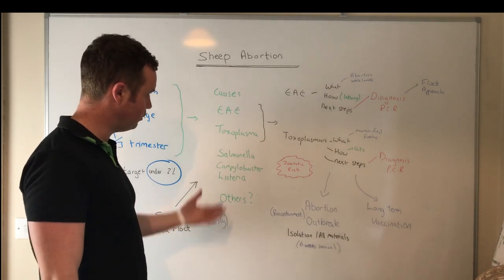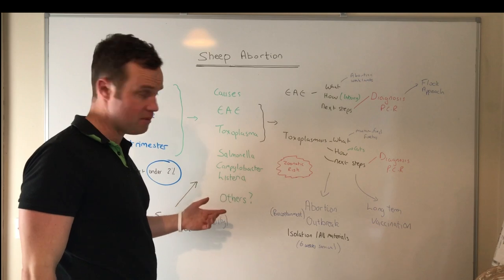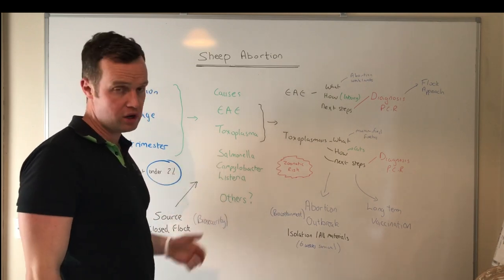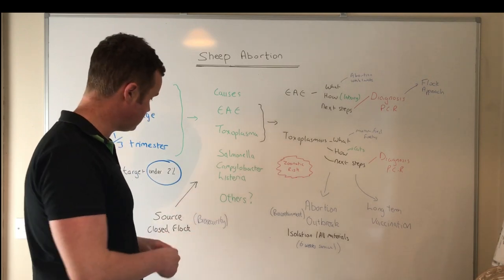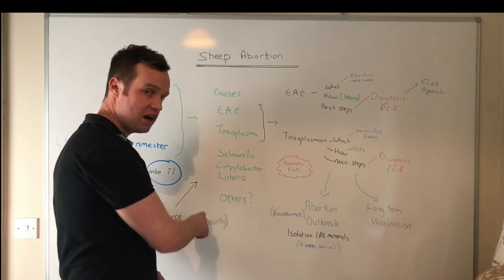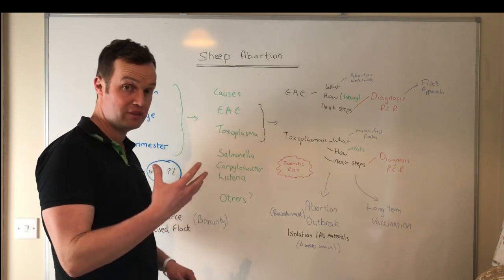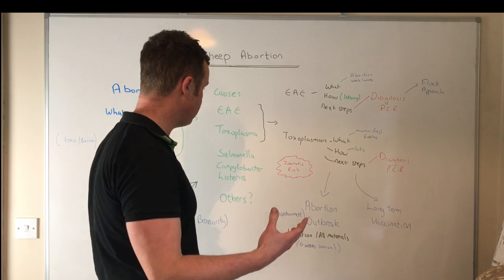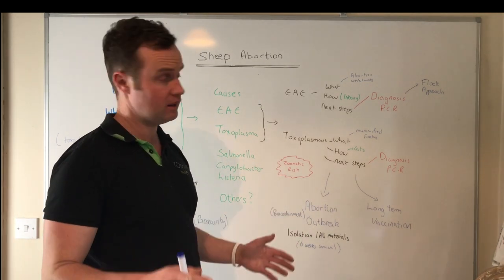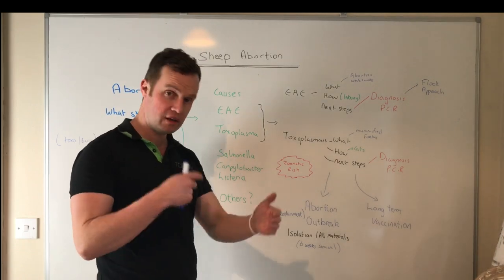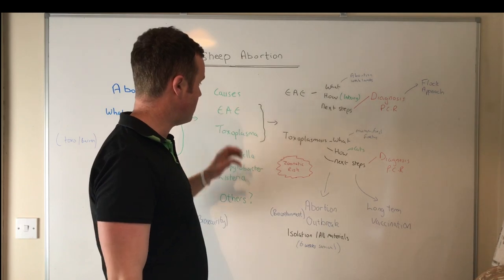Where does the source of these come from for flocks? Salmonella and listeria can be from other sheep, the environment, water, or feed, so we need to look at all areas of biosecurity. If you're not having abortions, the key thing is biosecurity - a closed flock is optimal, because certainly with enzootic abortion that's how the abortion agent is brought into flocks. With toxoplasma, the cat plays a key role in its life cycle, so biosecurity is important from that perspective as well.